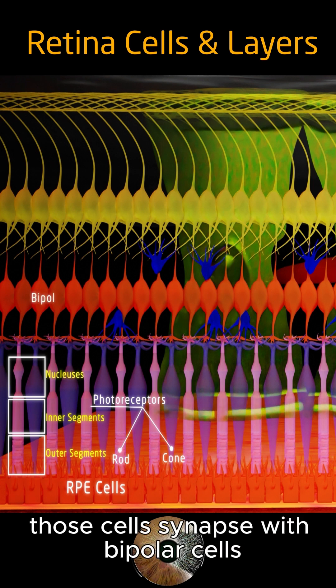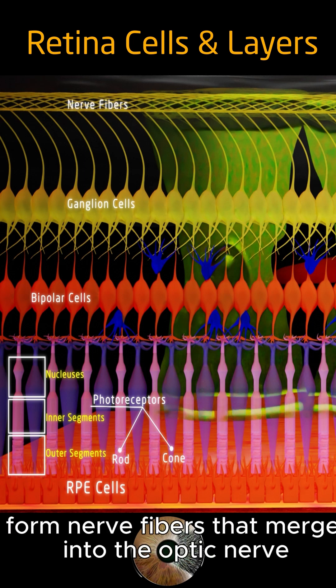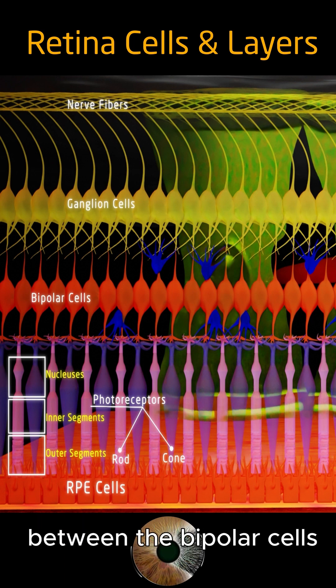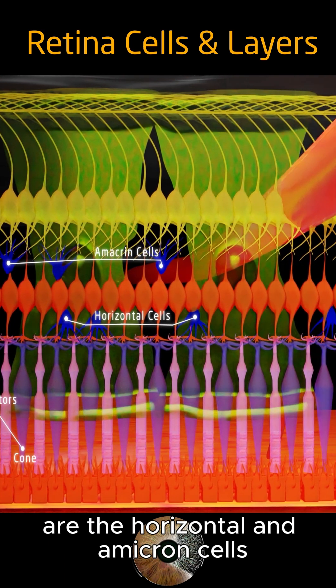Those cells synapse with bipolar cells, but also synapse with ganglion cells. Ganglion cells' axons form nerve fibers that merge into the optic nerve. Other important supportive cells between the bipolar cells are the horizontal and amacrine cells.